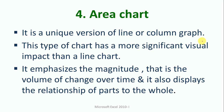The area chart is a unique version of line and column graphs. This type of chart has a more significant visual impact than a line chart because it covers the area. It emphasizes the magnitude — that is, the volume of change, how much change has happened over time — and it also displays the relationship of parts to the whole.